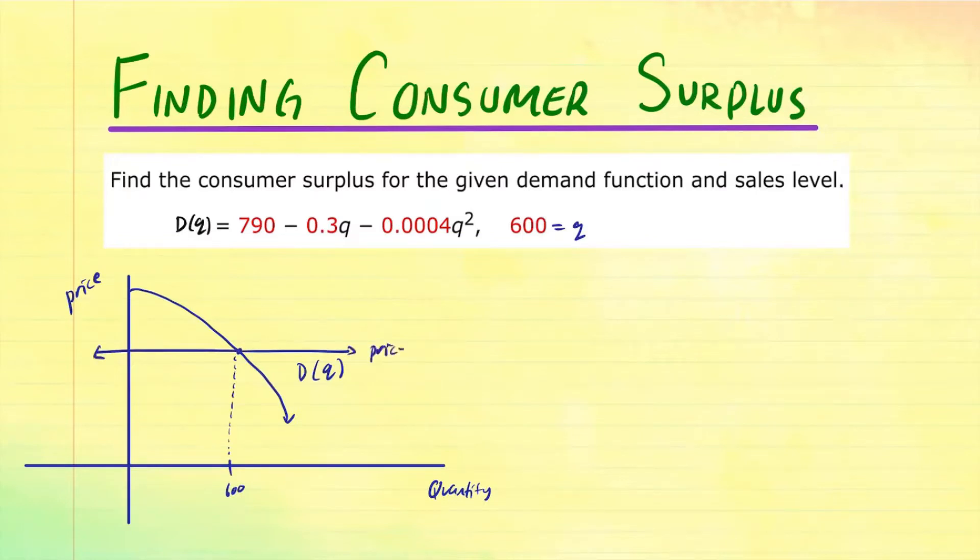So this is the price line, or you can call it equilibrium level. So we're looking for the area between the price line and under the curve of the demand function. So imagine we're going to integrate this function subtracting the price line.